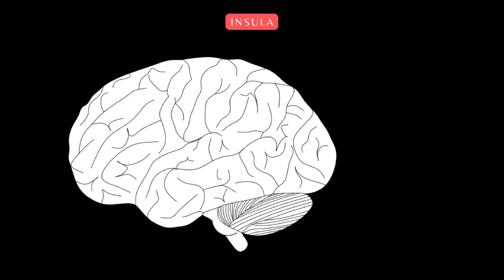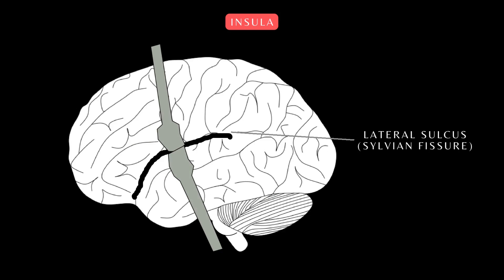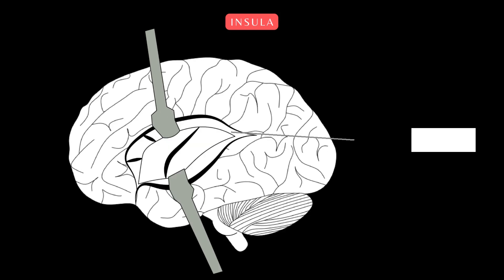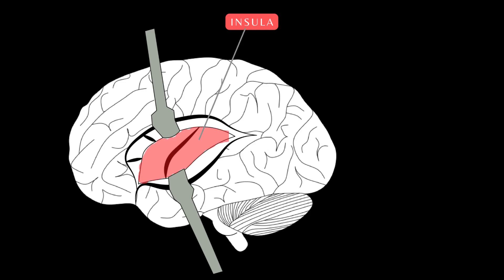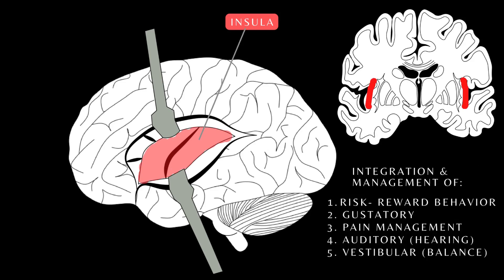The cerebrum has a fifth lobe hidden inside the lateral sulcus. Let's open the lateral sulcus to expose the insula. Here is the insula and its surrounding structures. A coronal section of the brain demonstrates another perspective of its exact location. The insula plays a major role in risk-reward behavior, gustatory and sensory-motor processing, pain pathways, auditory and vestibular functioning.